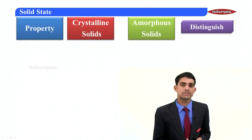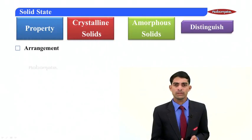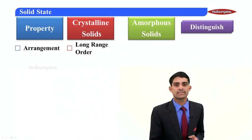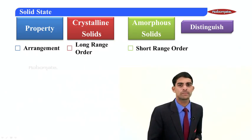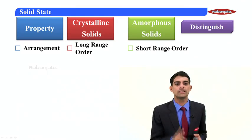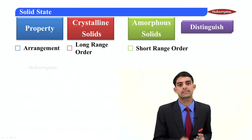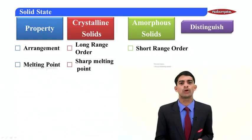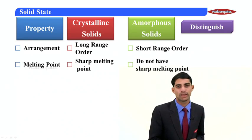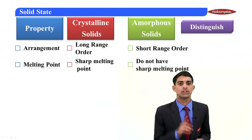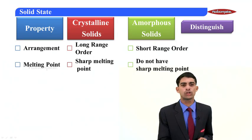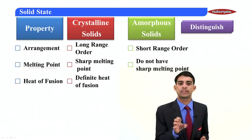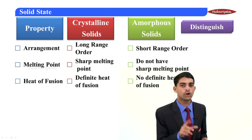Now, what are the differences between crystalline solids and amorphous solids? The first parameter is arrangement: there is a long-range orderly arrangement of particles in crystalline solids, whereas in amorphous solids there is only short-range orderly arrangement — no long-range orderly arrangement. The second property is melting point: crystalline solids have a sharp melting point, but amorphous solids do not, because the strength of all the bonds between the particles are not equal. The third property is heat of fusion: crystalline solids have a definite heat of fusion, while amorphous solids have no definite heat of fusion.